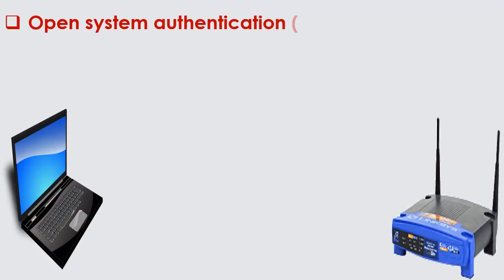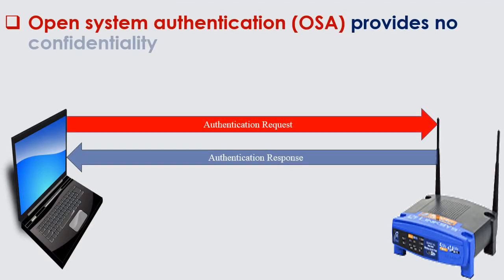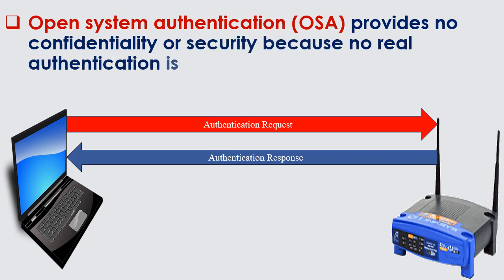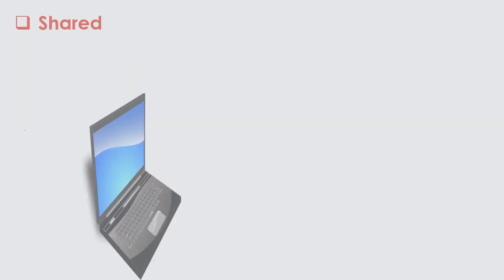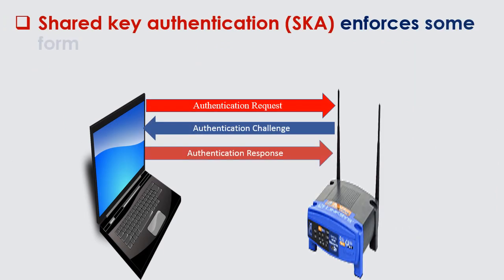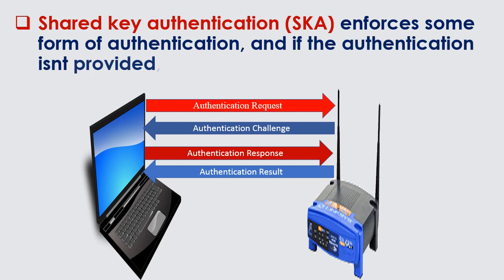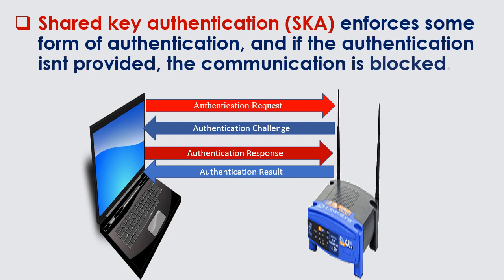Open System Authentication, OSA, provides no confidentiality or security because no real authentication is required. Shared Key Authentication, SKA, enforces some form of authentication, and if the authentication is not provided, the communication is blocked.